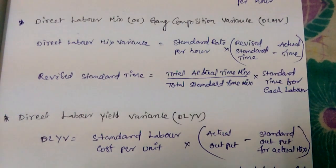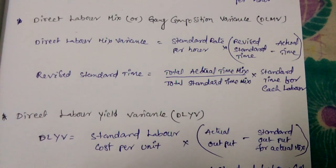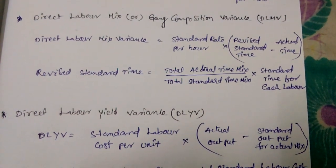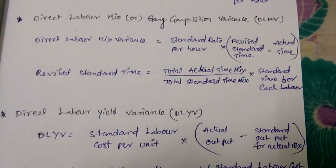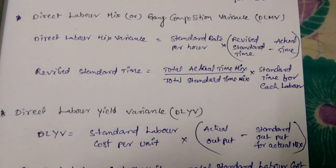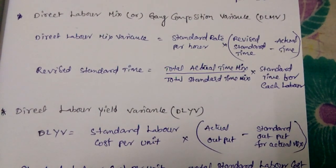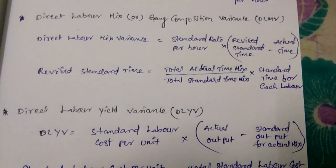Here, direct labor mix or gang composition variance, DLMV. Direct labor mix variance equals standard rate per hour into revised standard time minus actual time. Revised standard time equals total actual time mix by total standard time mix, then standard time for each labor.